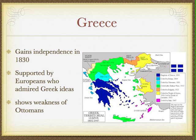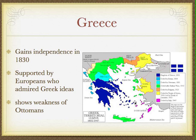Greece gained their independence in 1830 and became the Kingdom of Greece in 1832. They were supported by the British and the French, who admired Greek thinkers like Plato, Socrates, and Aristotle. The Ottoman Empire had controlled this region for hundreds of years, and all of a sudden they lost these islands and surrounding areas.